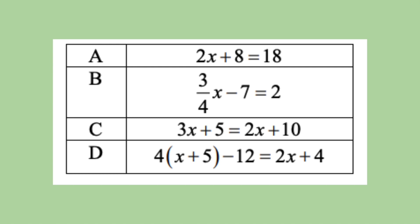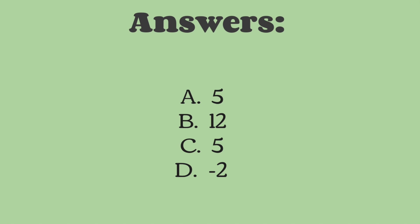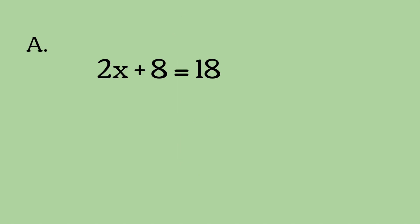Now I want you to do some equations on your own. Feel free to pause the video and take some time for yourself to do it. These are the answers you should have gotten: A should be 5, B is 12, C is 5, and D is negative 2.